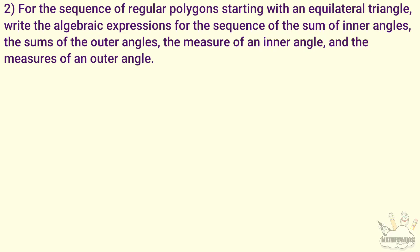The equilateral triangle begins the sequence of regular polygons. We need to find algebraic expressions for: the sum of inner angles, the sum of outer angles, one inner angle, and one outer angle — each as a sequence. These are the algebraic expressions for the sequence.